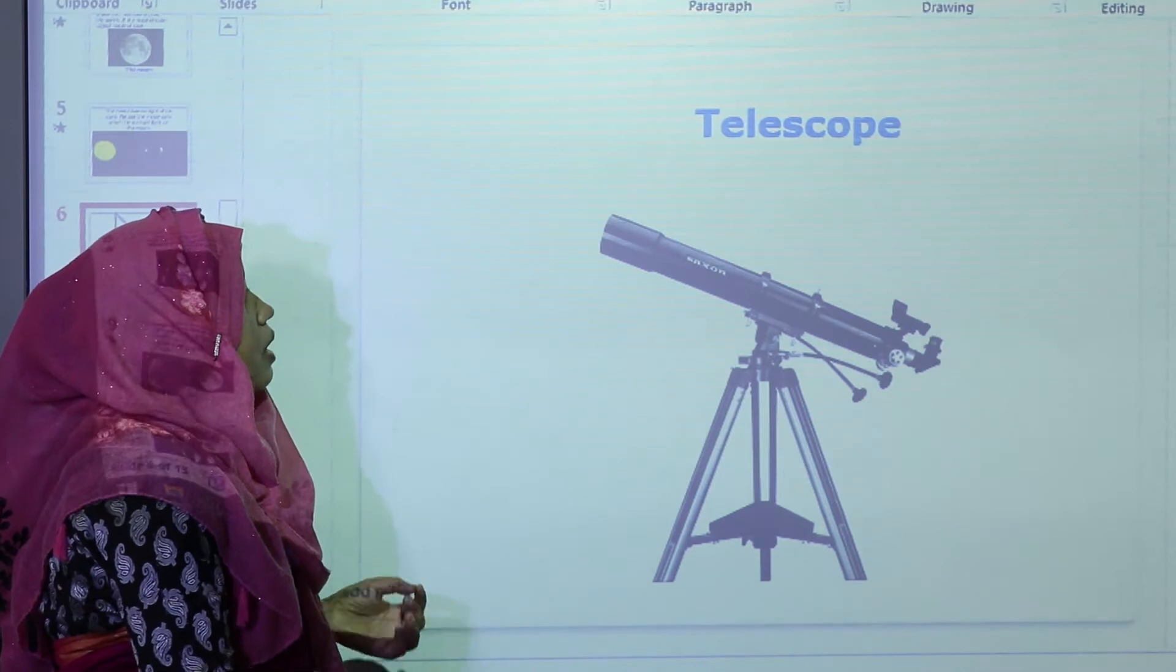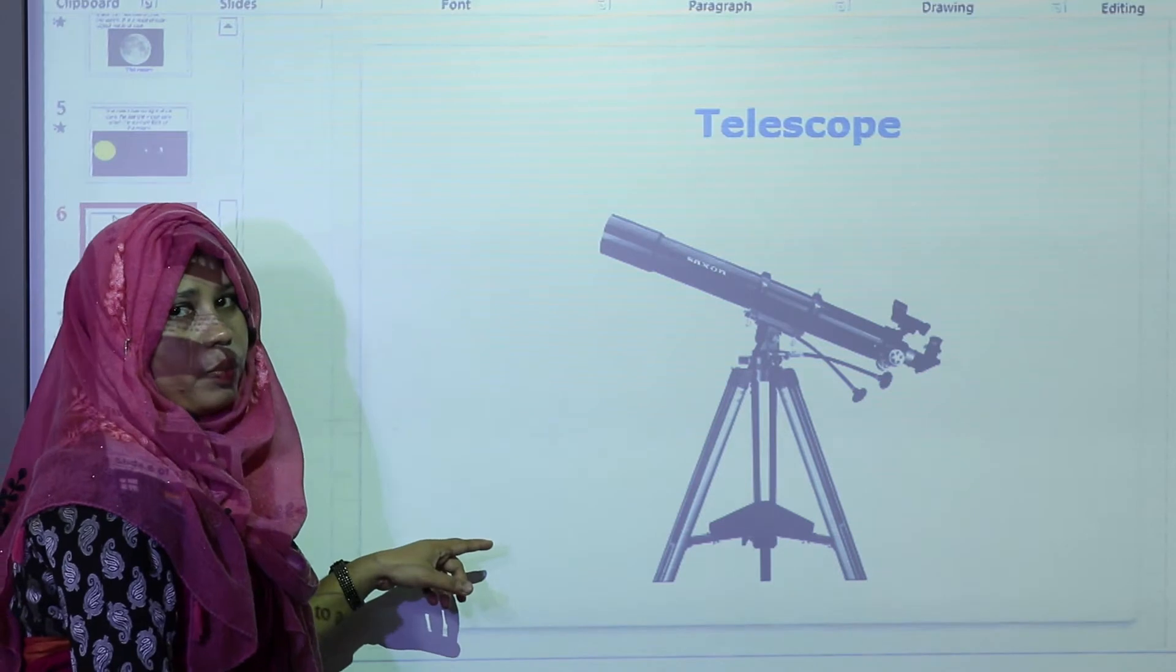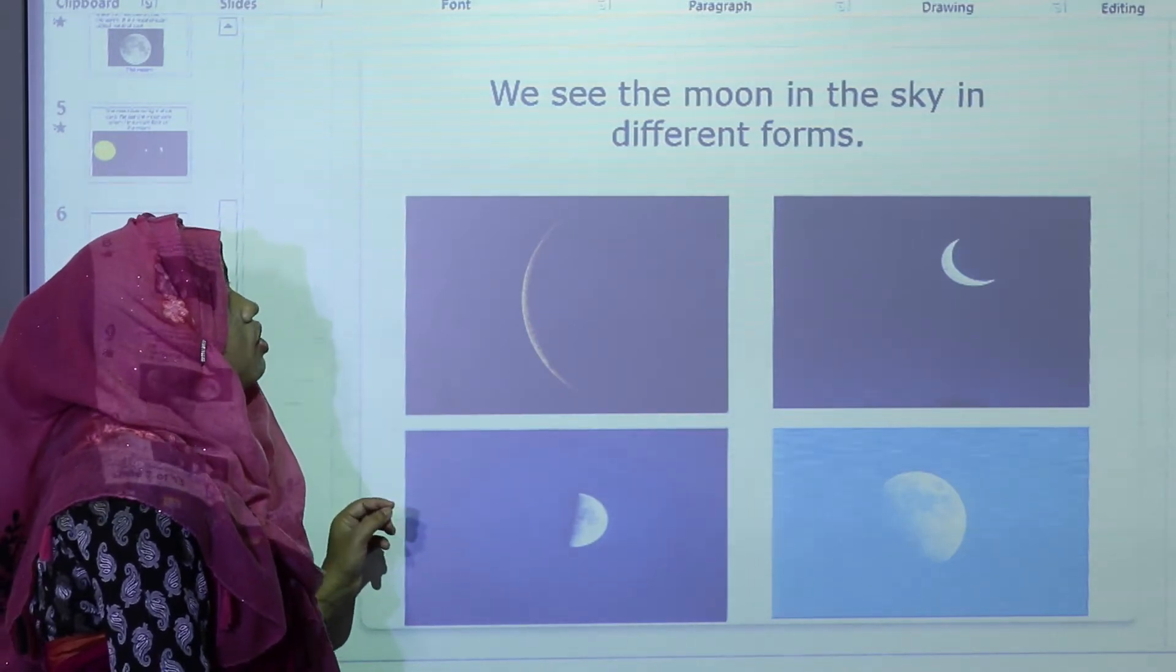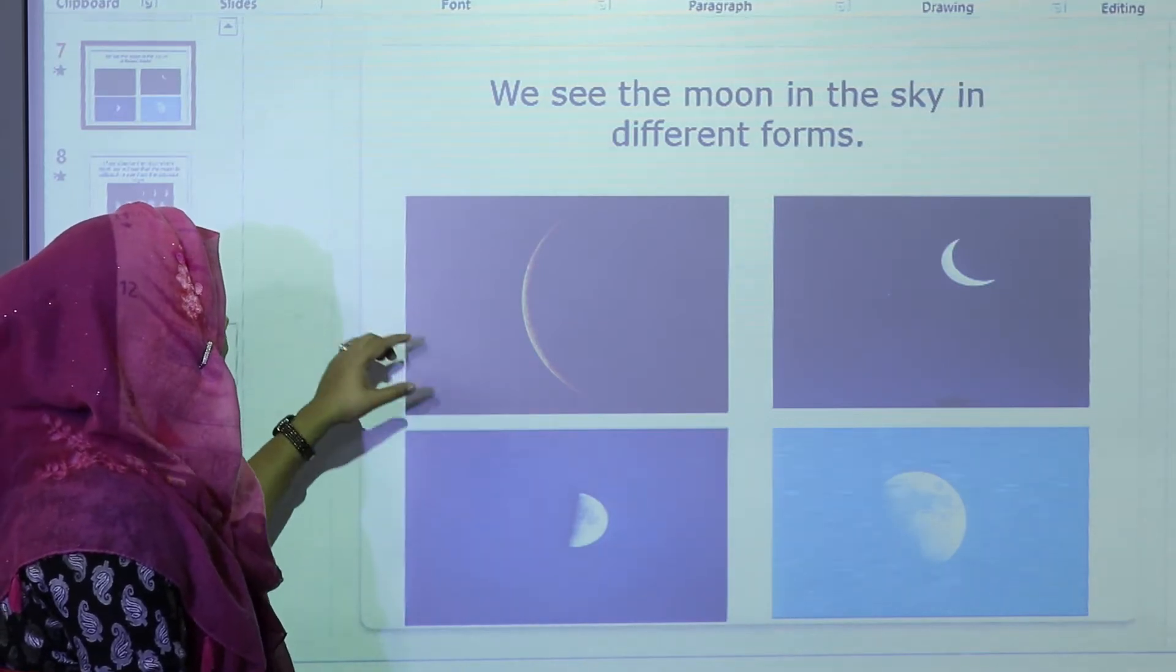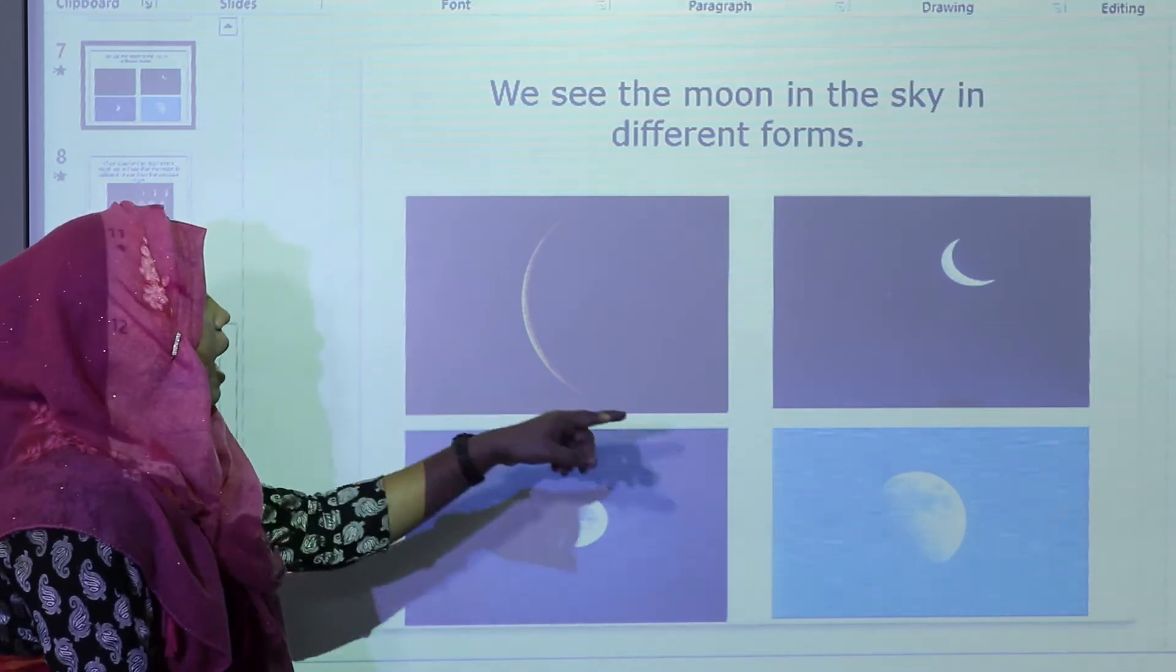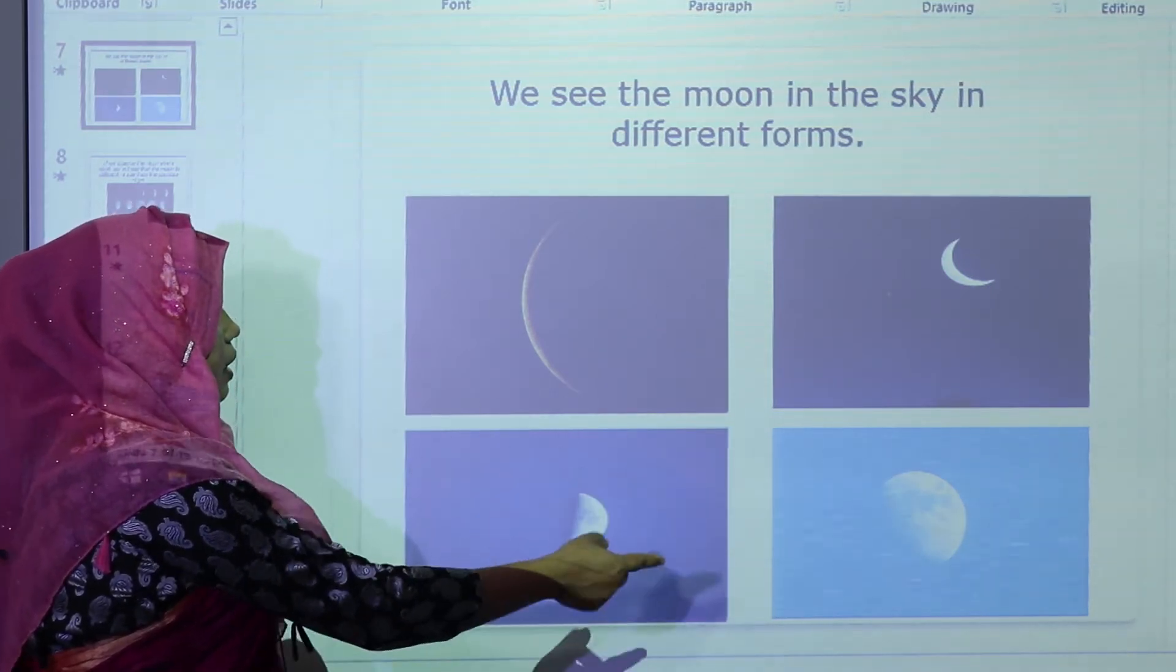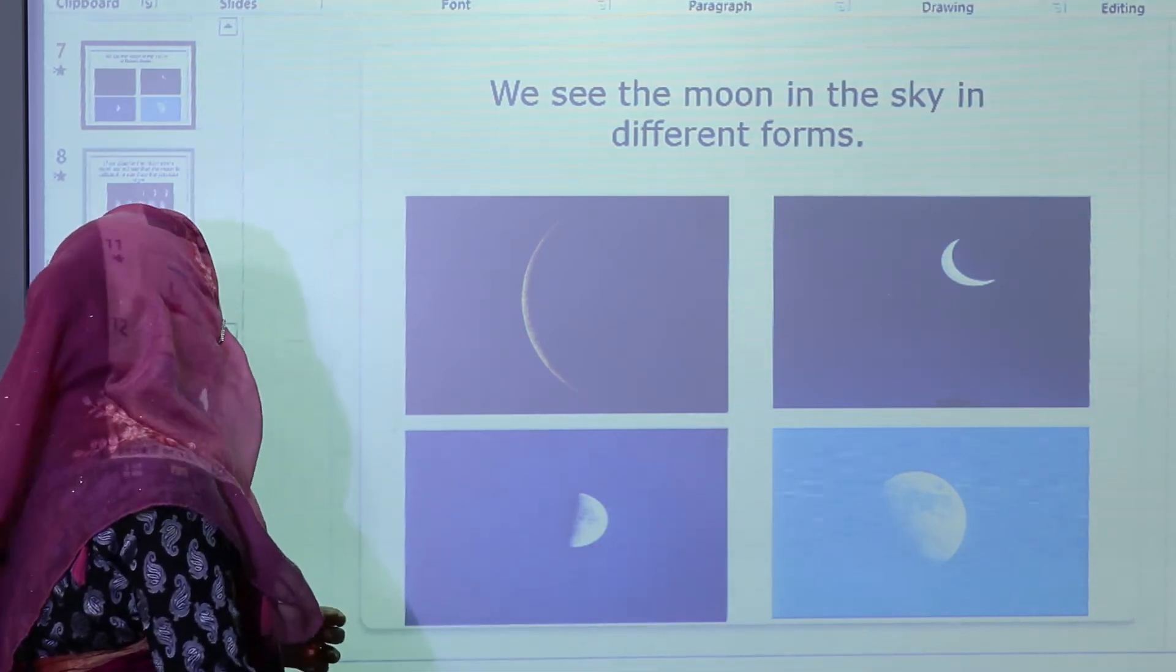When there's no sunlight, we use technology to see the moon in the sky. This technology is telescope. We observe the moon by the telescope, then we see the moon in the sky in different forms. We can understand from this picture: here the moon is very small, at the next picture we see the moon is a little bit bigger, and then the next, the moon is more bigger than the first picture.